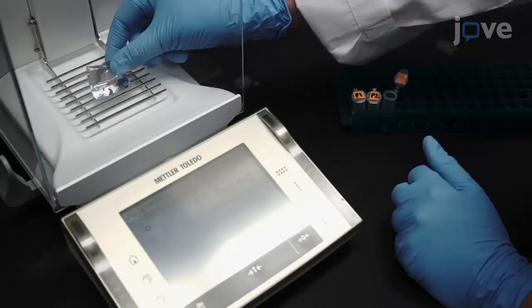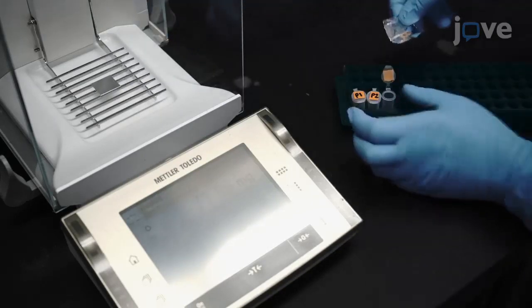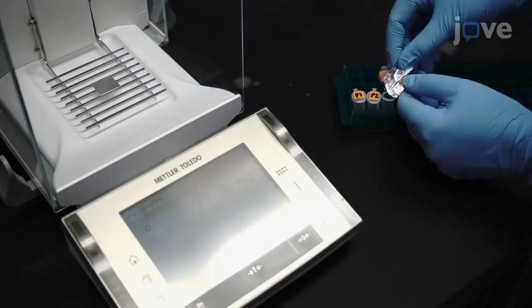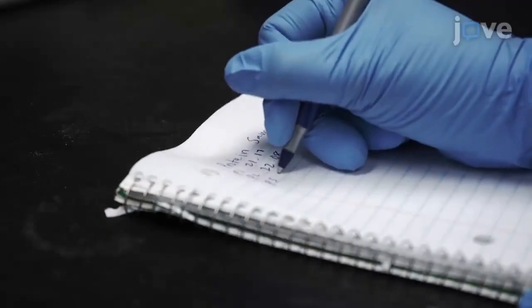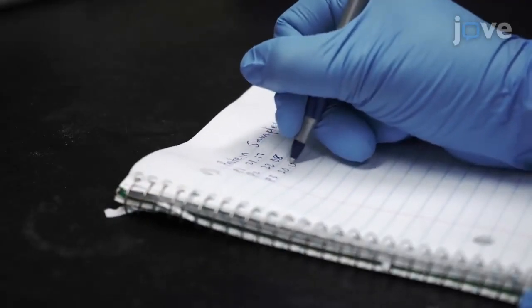Weigh out replicate samples of each tissue into labeled 1.5-milliliter microcentrifuge tubes. Next, record the precise mass of each sample.